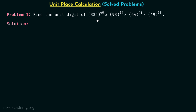Let us start with 332 raised to power 40. The number 332 has 2 at its unit place, so we use the rule from the previous lecture. Whenever we have 2 at the unit place, we take the power and divide it by 4, then note the remainder. Dividing 40 by 4 gives remainder 0, so we write this as 2 raised to power 0, which gives us 6 at the unit place.